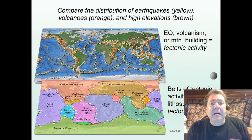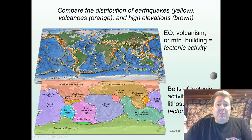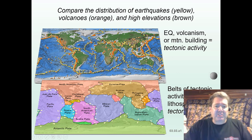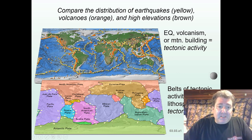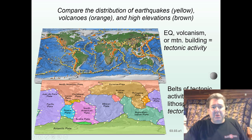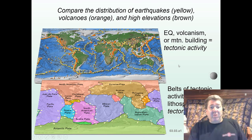Overlaying the locations of volcanoes and earthquakes on a map, we can see that these are all known as tectonic activity because they're related to the tectonic plates. The locations of earthquakes and volcanoes help us find and mark the plate boundaries — even smaller plates like the Caribbean plate, the Cocos plate, and the Philippine plate — all demarcated by the locations of volcanoes, earthquakes, and mountain-building activities.